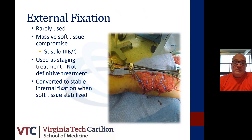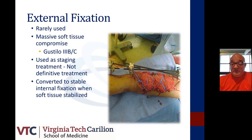External fixation is rarely used, but when used, it's mainly as a staging treatment, not a definitive treatment. Once the soft tissue envelope injury has been addressed, we convert these to definitive fixation. It does serve as a staging part of treatment, especially at our trauma center when we see these mangled extremities.